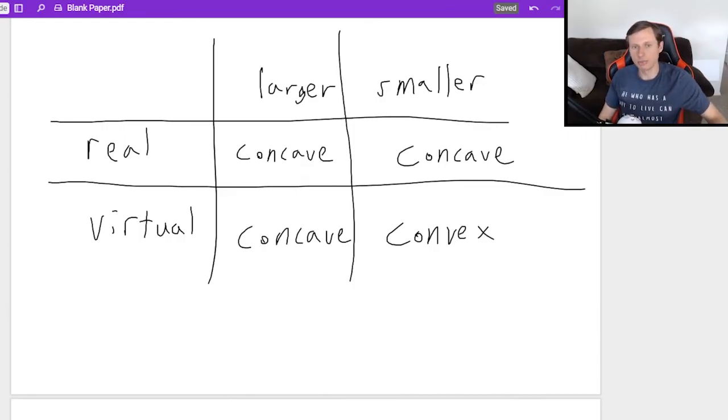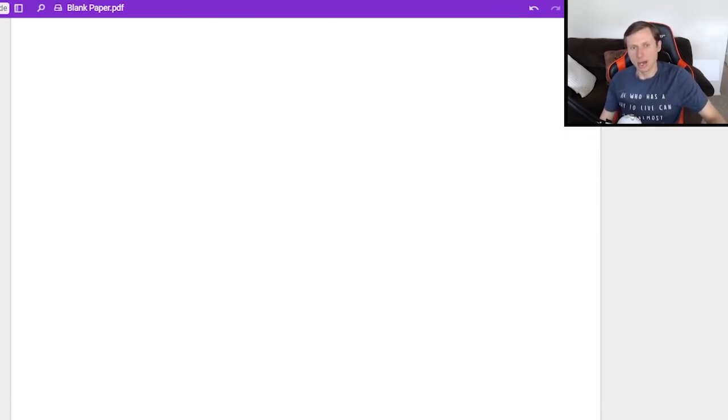So since I wanted virtual and larger, that's this one, it's concave. So now let's go to the math. I say the magnification is two, you can either use the height equation, which probably won't help you. Or we can use the distance equation, which we will definitely be doing.